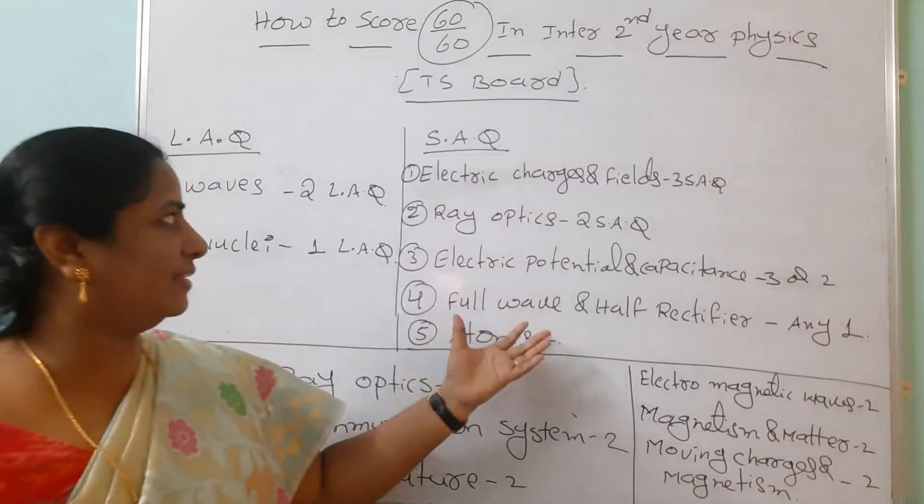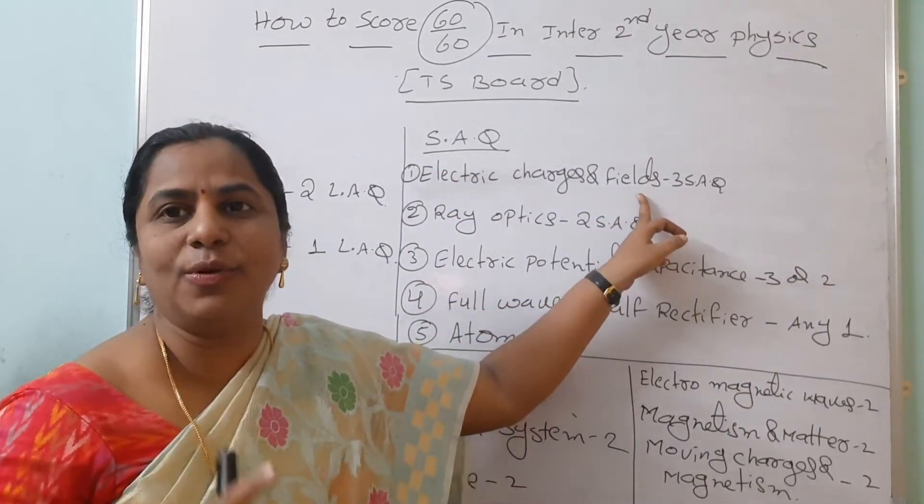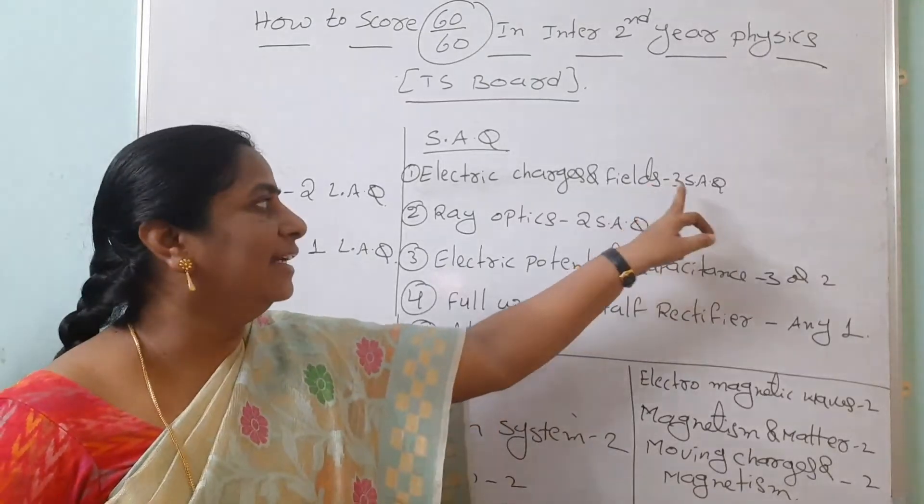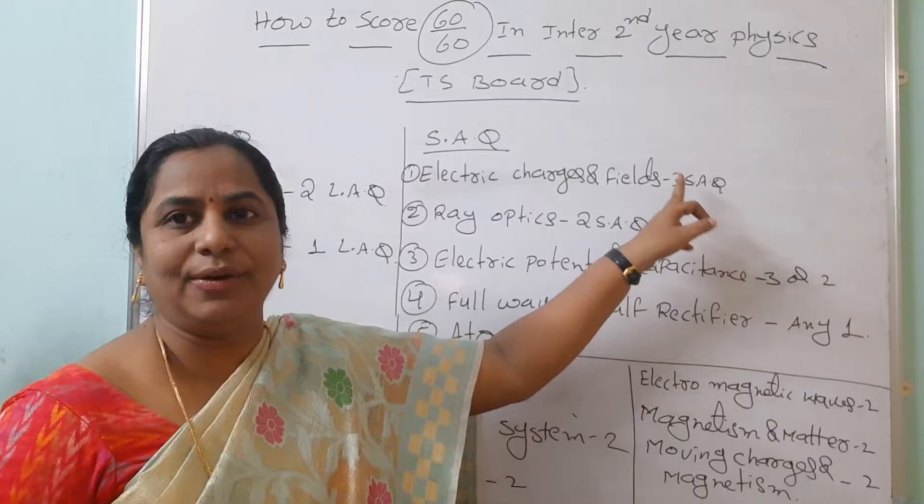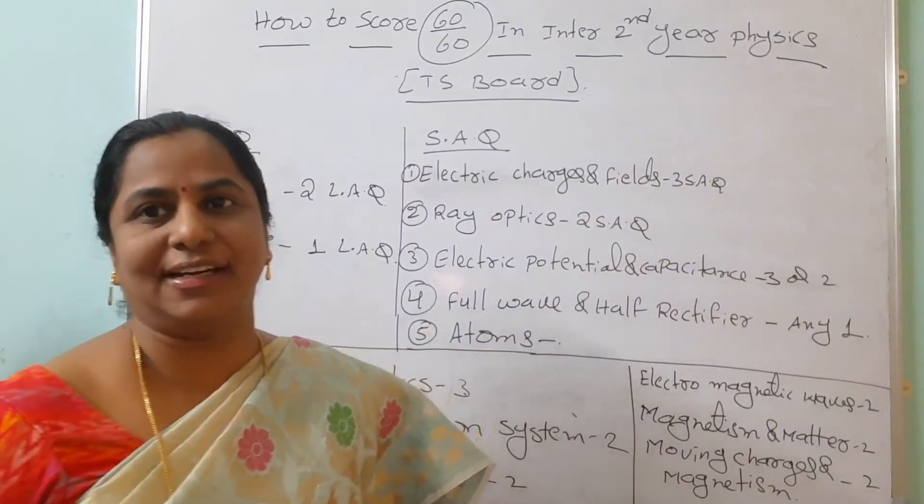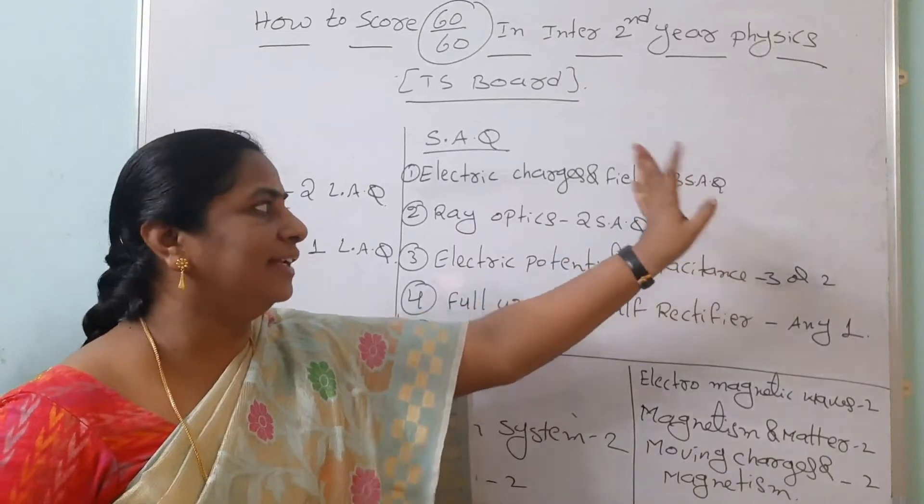Now come to short answer questions. Don't leave electric charges and fields. Here only six SAQs are there. In the modal paper, they have given three SAQs. So you are expecting three SAQs from electric charges and fields. Out of six, you can write three SAQs.